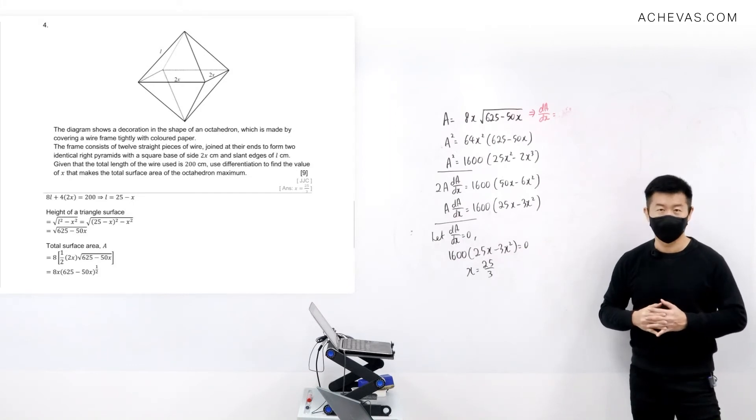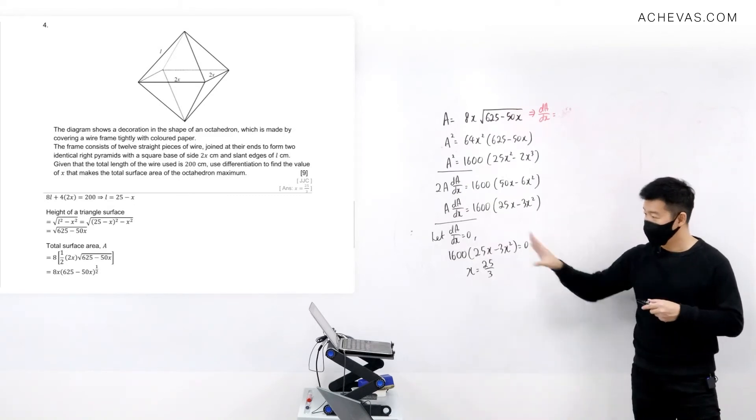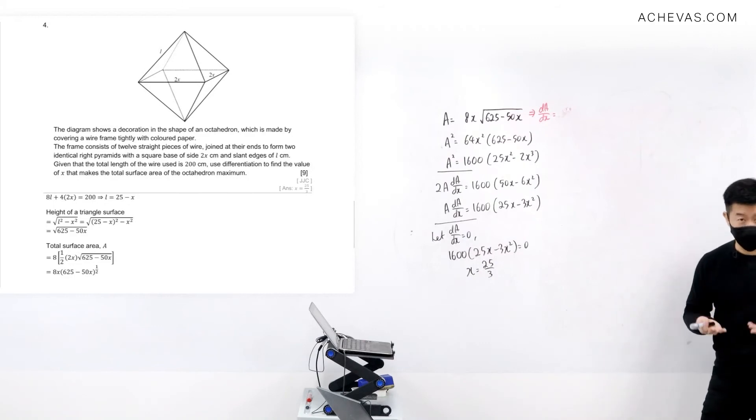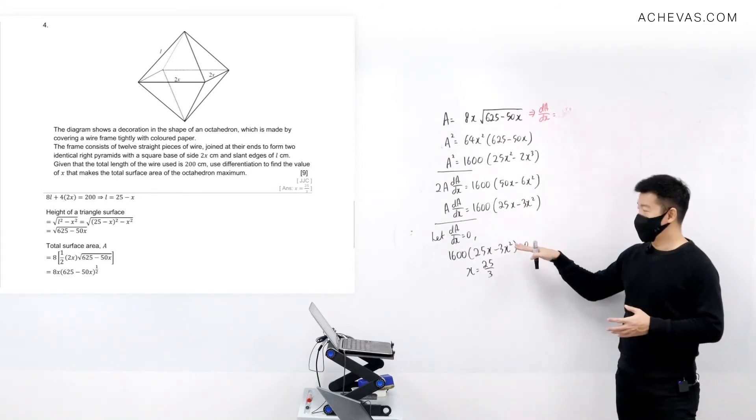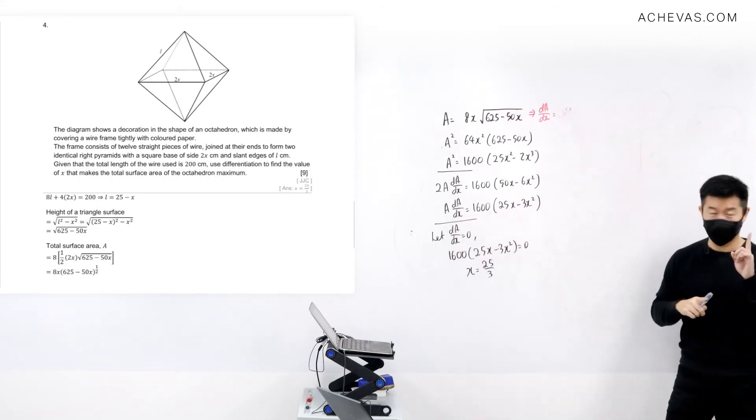I must still verify whether this x is going to cause A to be a maximum. So I'm going to verify. And of course, for something that is like this, maybe using the first derivative is good.